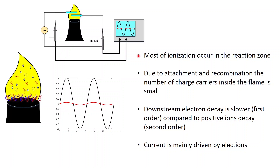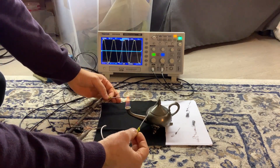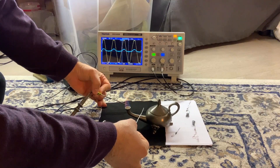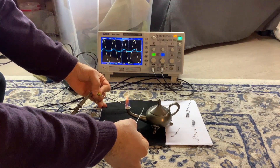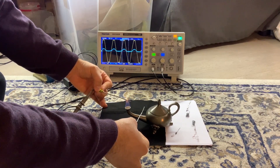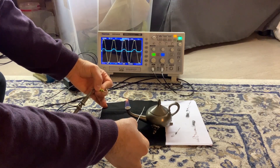For the second experiment, I touch the second electrode to the burner and bring the first electrode into the flame. During the positive half cycle we see rectification; during the negative half cycle there's a little voltage but not much. If I lift the electrode inside the flame upward, we still get voltage on the positive half cycle, but the negative half cycle becomes essentially flat — no voltage.